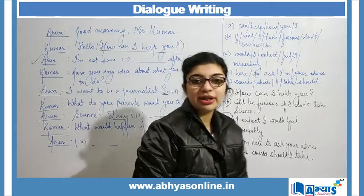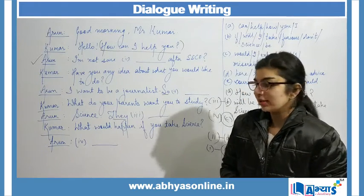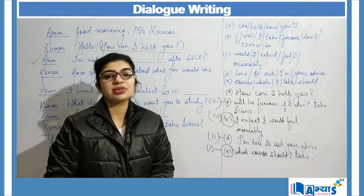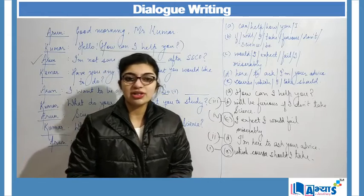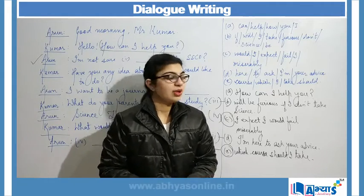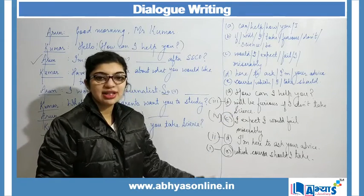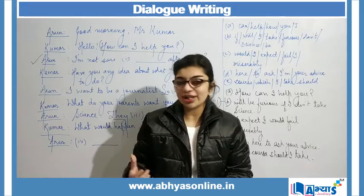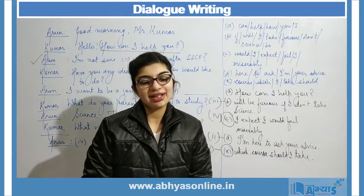The dialogues between Arun and Mr. Kumar are now completed, and this is the example of dialogue writing. In this video we have talked about dialogue writing — a conversation between two or more people — and covered the concept of jumbled sentences as well. My suggestion is that this is just one example; keep on practicing and learning in order to become a master in English. Thank you.